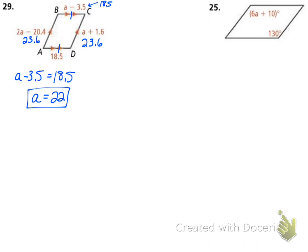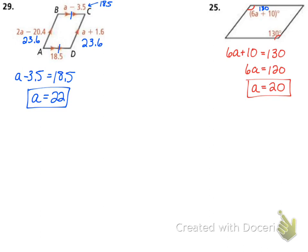On the last problem on the top, we have two opposite angles, so they're equal to each other. So 6A plus 10 equals 130. Subtracting 10 gives 6A equals 120. Dividing by 6 gives A equals 20. Plugging back in, those angles are 130 degrees, and the other two angles are going to be 50 degrees.